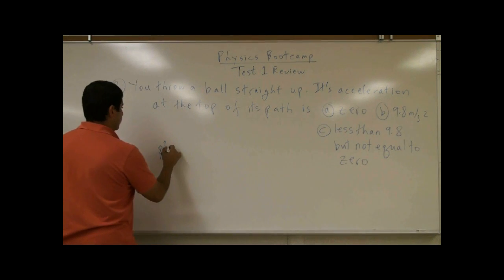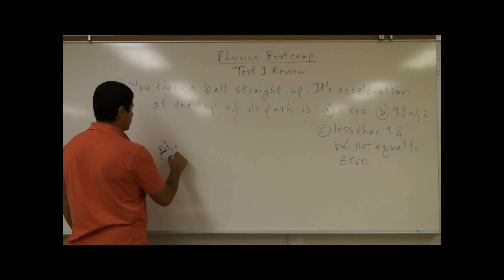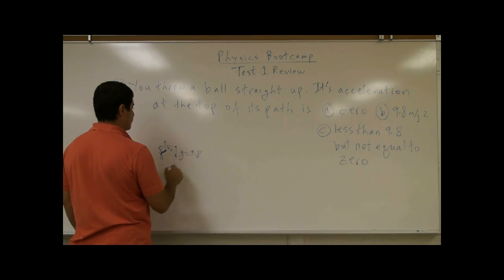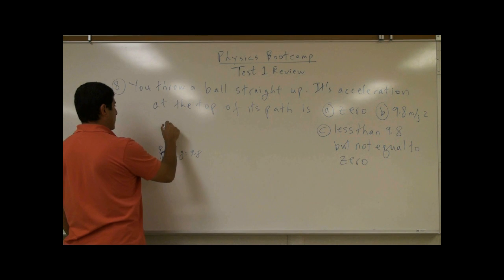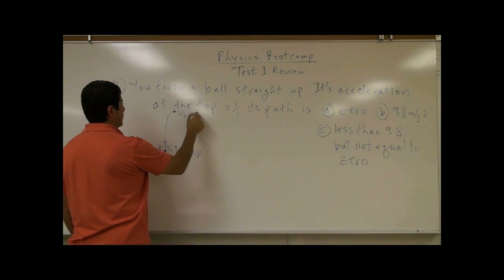So you give it a certain initial velocity. The acceleration is down — G. We give it the symbol G. Therefore, the velocity slows down, slows down, slows down. The final velocity at the top is zero.